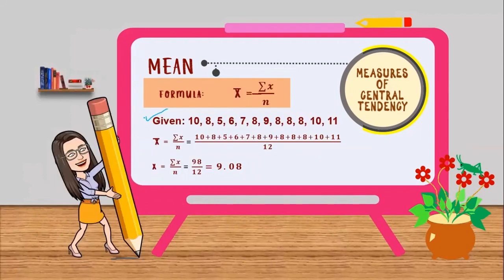So we can use the given formula x bar equals summation of x over n. We have to substitute this given values. So we have 10 plus 8 plus 5 plus 6 plus 7 plus 8 plus 9 plus 8 plus 8 plus 8 plus 10 plus 11 divided by 12.